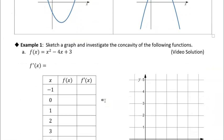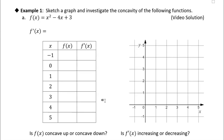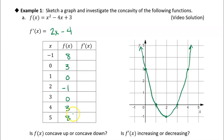Let's look at this first example. We have a polynomial quadratic function, and the first thing we're asked to do is find f prime of x. Since it's a polynomial with power functions, we get 2x — the derivative of x squared is 2x, the derivative of negative 4x is minus 4, and the derivative of the constant 3 is zero. So f prime of x equals 2x minus 4.